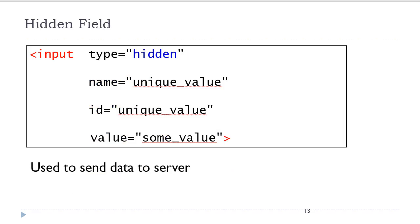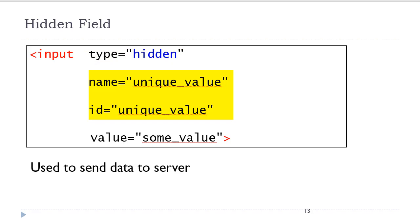A hidden field is coded with the input tag, and the type attribute is set to the value of hidden. This is not visible on the page, so therefore you only need a name and an ID attribute. However, it is used to send some type of data to the server, so you will need to code in a value.